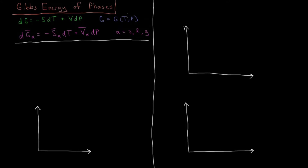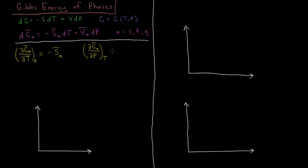Being a function of two variables, T and P, we can define the partial derivatives of g-bar. The partial derivative of the molar Gibbs energy of a phase with respect to temperature, holding pressure constant, is equal to the negative molar entropy of that phase. And the partial derivative of the molar Gibbs energy with respect to pressure, at constant temperature, is equal to the molar volume of that phase. So the critical quantities are how much entropy does a mole of that phase have, and how much volume does a mole of that substance take up.